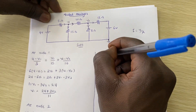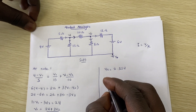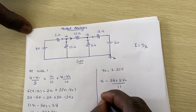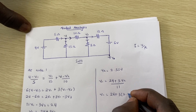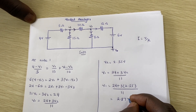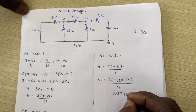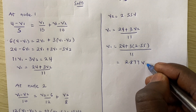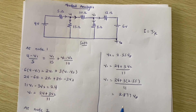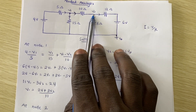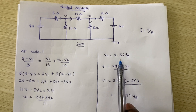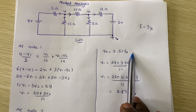Now we know V2 = 2.55 volts. Substituting back: V1 = (24 + 3 × 2.55) / 11 = (24 + 7.65) / 11 = 2.77 volts. Now that we have V1 and V2, we can find any current. For the current through the 12-ohm resistor: I = (V2 − 6) / 12.